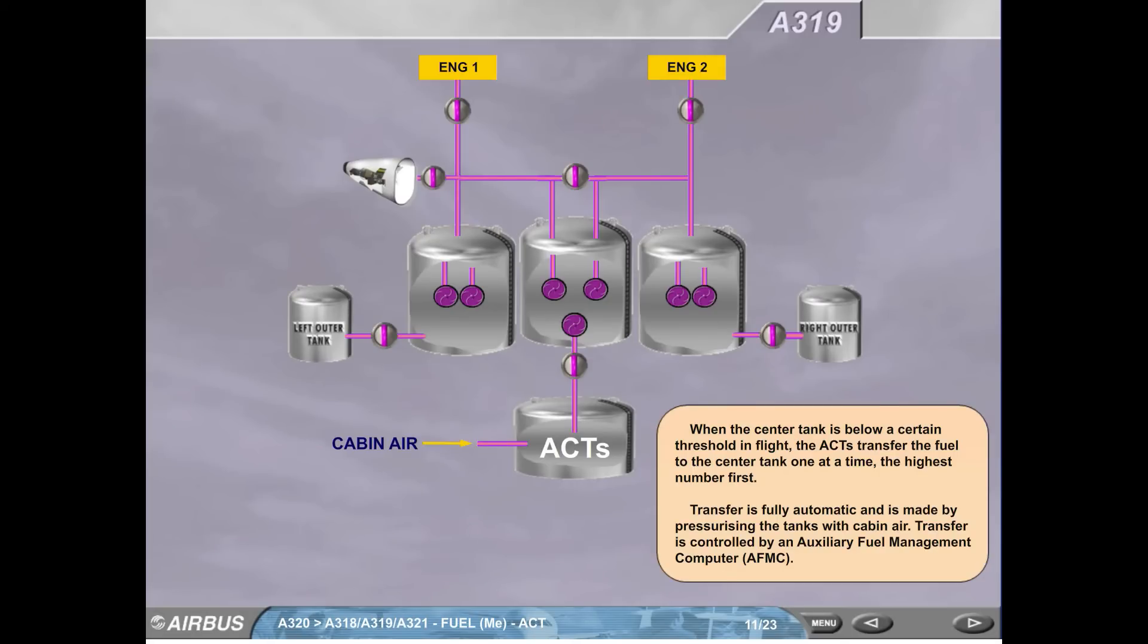When the center tank is below a certain threshold in flight, the ACTs transfer the fuel to the center tank one at a time, the highest number first. Transfer is fully automatic and is made by pressurizing the tanks with cabin air. Transfer is controlled by an auxiliary fuel management computer, AFMC.